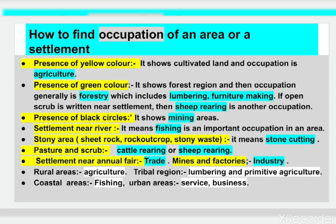First is the presence of yellow colour — it shows cultivated land, so the occupation is agriculture. Presence of green colour shows forest region or vegetation; the occupation is generally forestry, which includes lumbering and furniture making. If open scrub is written near a settlement, then sheep rearing is another occupation.